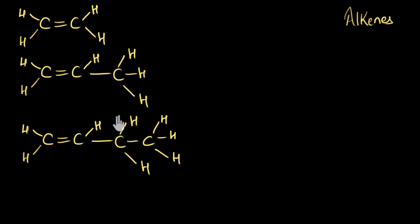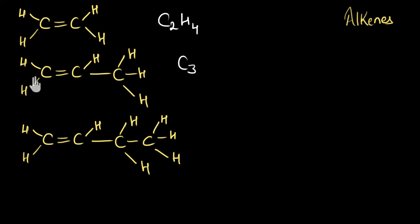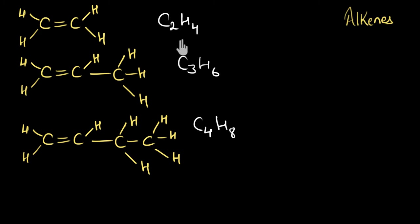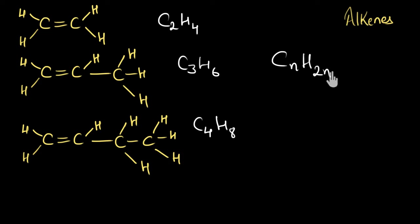Let's find the molecular formulas of these alkene members. The first has two carbons and four hydrogens: C₂H₄. The next has three carbons and six hydrogens: C₃H₆. The next has four carbons and eight hydrogens: C₄H₈. You can clearly see that the number of hydrogen atoms is double the number of carbon atoms — 4 and 2, 6 and 3, 8 and 4. That means the general molecular formula is CₙH₂ₙ. If there are N carbons, then the number of hydrogens is twice that number, 2N.